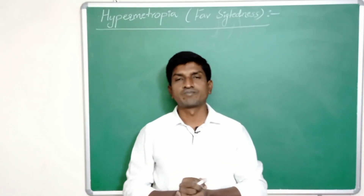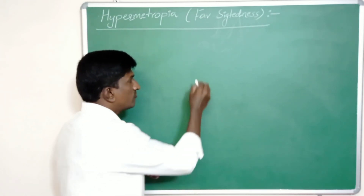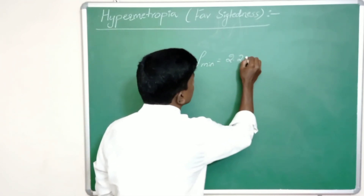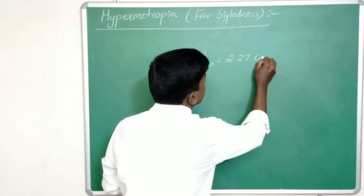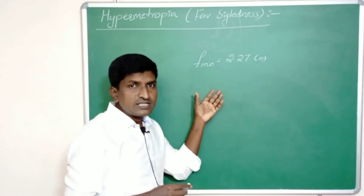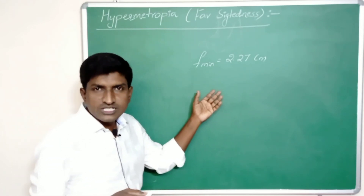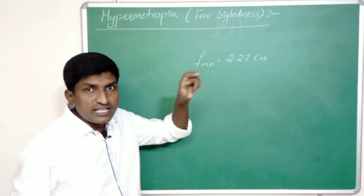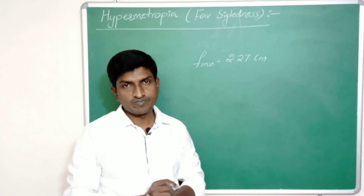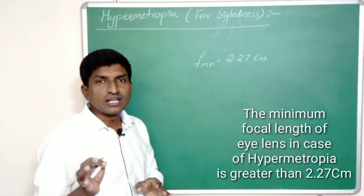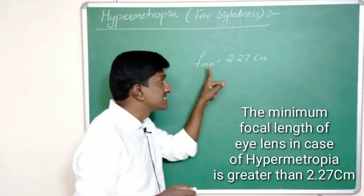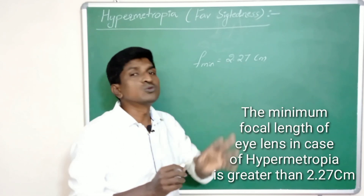What is the reason for hypermetropia? We know that the minimum focal length of the eye lens is 2.27 centimeters. The minimum focal length of a person who has hypermetropia is greater than 2.27 centimeters.